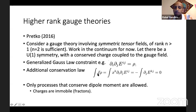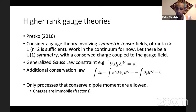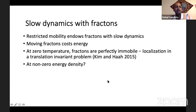If you look at the dipole moment in a volume, x times ρ, you can use Gauss-law to write this as x times the double derivative of E. You can use integration by parts to turn this into a volume integral of a divergence. And using the divergence theorem, if you fix the electric field on the boundary, then not only does the charge inside that volume have to be conserved, but in fact the dipole moment of that volume also has to be conserved. So only processes that conserve dipole moment are allowed.